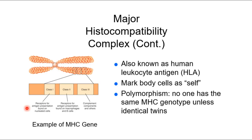Part of how we identify self from non-self is the major histocompatibility complex, or MHC. Antigens are proteins usually found on a cell that identify it as self or other. The MHC is the specific antigen we use for this recognition — it's like a name tag that says 'I'm Reeves,' and all of my cells carry this MHC. It's also known as the human leukocyte antigen, and it comes in different classes.